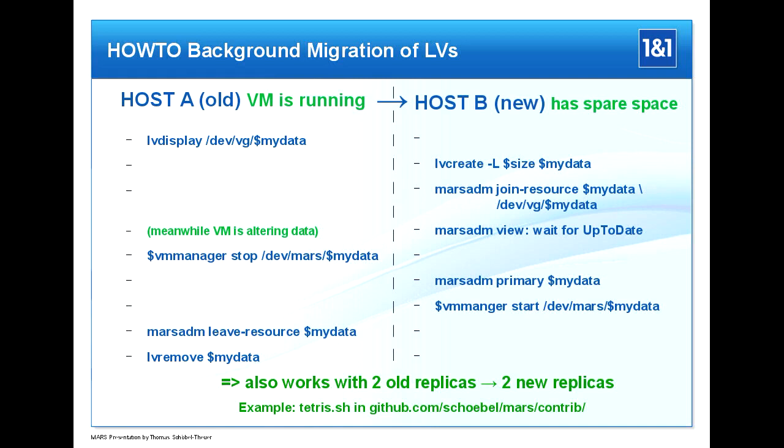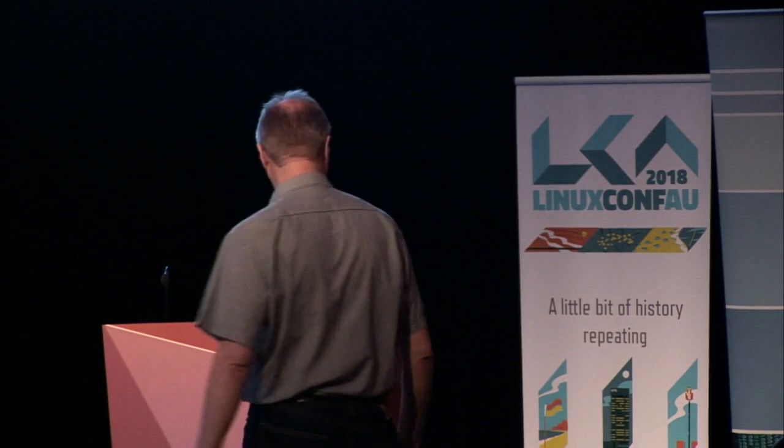You wait for status 'up to date' in the mars-rdm view command. Then you can switch over: stop the machine, run mars-rdm primary — similar to DRBD if you're familiar with it — then start the machine at the new host. You can then remove the old resource by leaving the MARS cluster and doing lv-remove to get rid of the data. Afterwards you can decommission the hardware for lifecycle replacement or whatever you need.